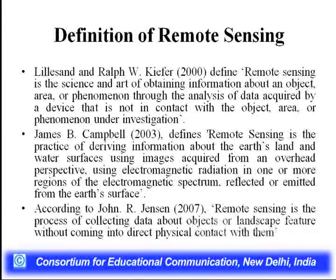Campbell further specifies electromagnetic radiation in one or more regions of the electromagnetic spectrum, reflected or emitted from the earth's surface. John Jensen defines: 'Remote sensing is the process of collecting data about objects or landscape features without coming into direct physical contact with them.' Now I would like to present the different elements, objects, and steps involved in the procedure of remote sensing.